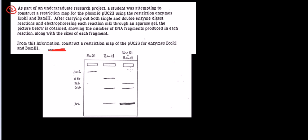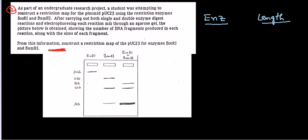From this information, construct a restriction map of PUC 23 for enzymes ECO R1 and BAM H1. Remember, like all other restriction mapping problems, in this case they provided the data in the form of an electrophoresis gel picture to make it more realistic for science learners. We need to construct the table form so that we can easily solve the problem. We'll put the enzyme name and the length of the fragment in our table.